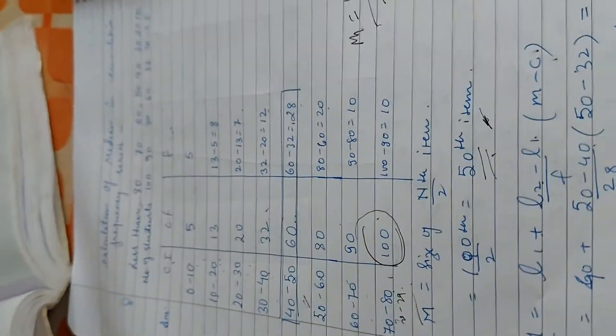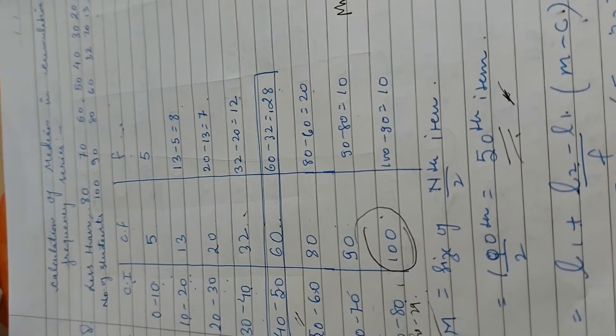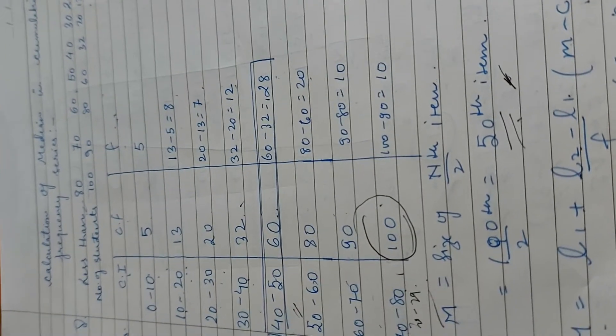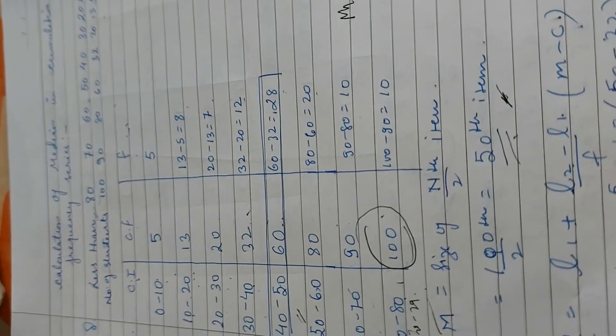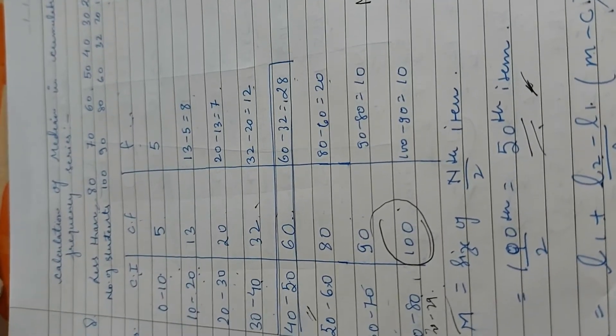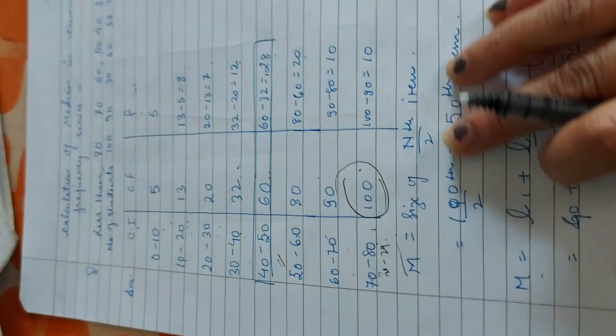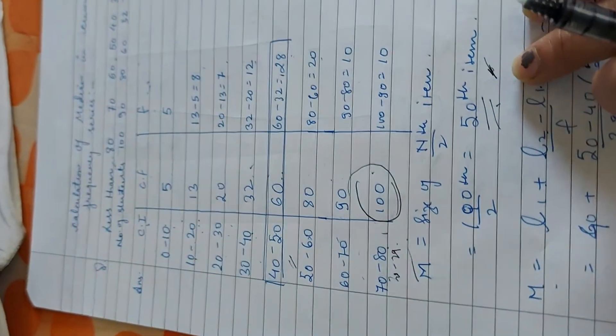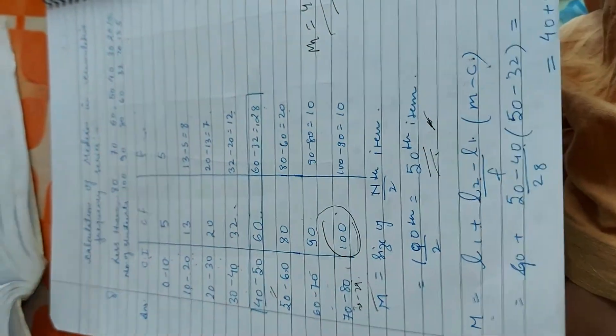Hope you people have understood. When we attempt this question, less than or more than, we will make the first class interval in small and large. Since we have given the cumulative frequency, we have to remove the frequency from the cumulative frequency. Then the formula is n by 2. We will make the first class interval in which class interval is. We will know which class interval is. And then the formula is put and we will calculate the answer.